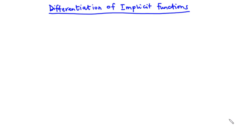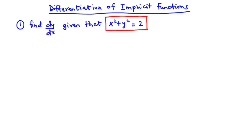Now let's solve some questions regarding implicit functions. In our first question we are going to find dy/dx given that x squared plus y squared is equal to 2.